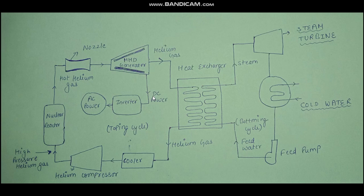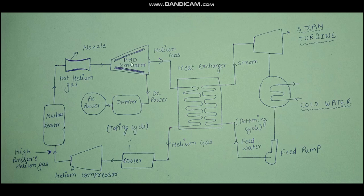Now I will explain the liquid metal closed cycle MHD system. It is similar to the inert gas system, with only one difference: we use liquid metal — specifically potassium — in place of helium gas as the working fluid. Liquid potassium is heated in the nuclear reactor and passed through a nozzle to increase its velocity. The high-velocity liquid metal is then passed through the MHD duct to produce DC power.